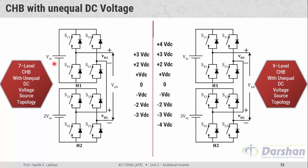In the seven-level CHB, the DC supply given to the first bridge is VDC whereas the DC supply given to the second bridge is 2VDC. The nine-level CHB also has a two-cell construction: the first cell has a DC supply of magnitude VDC, but the second cell has a DC supply of magnitude 3VDC. Now let me explain how we can produce the seven-level output using this two-cell structure.